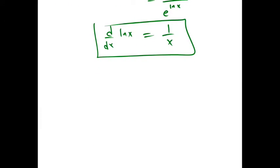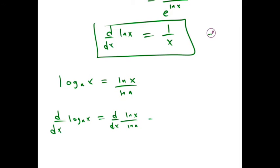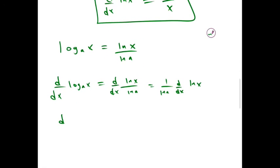If you have a log with a different base, let's say a, log base a of x, you can use change of base formula to rewrite both of these as ln. So ln x over ln a. If you want to find the derivative of this log base a of x, you can just take the derivative of ln x over ln a. Pull 1 over ln a out, so the derivative of a log with any base equals 1 over ln a times x.